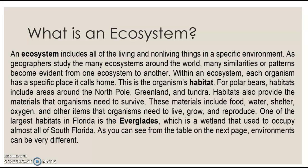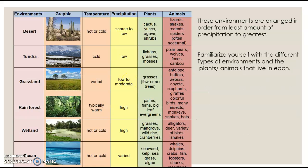As you can see from the table on the next page, environments can be very different. These environments are arranged in order from the least amount of precipitation to the greatest. You need to familiarize yourself with the different types of environments and the plants and animals that live in each.